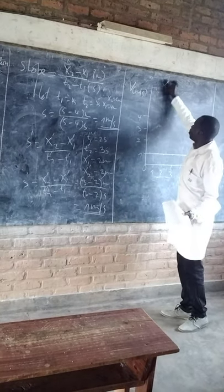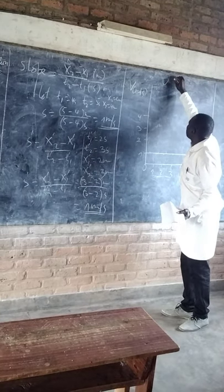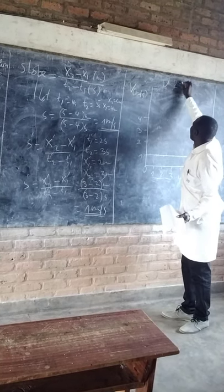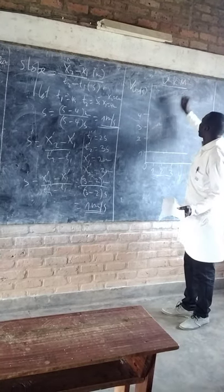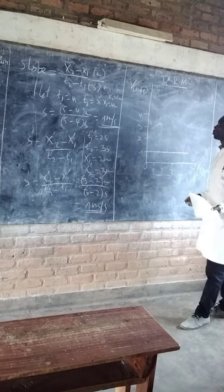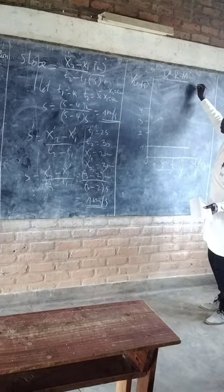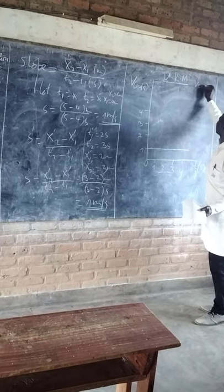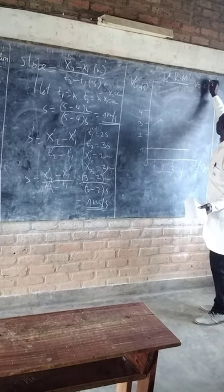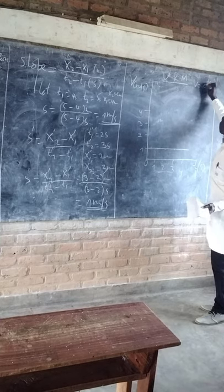For URM — Uniform Rectilinear Motion — we conclude URM velocity is constant.